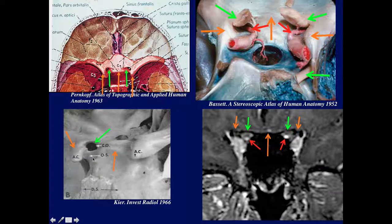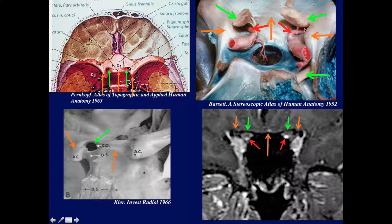Looking from behind, these are the anterior clinoids, and this is the opening for the optic canal. The anterior clinoid is always lateral to the optic canal. Here are the planum sphenoidale and tuberculum sellae. Looking from above and behind, here's the pituitary fossa with the diaphragma sellae, and these are the two optic nerves cut as they enter the optic canal. The ophthalmic artery comes off the carotid as it emerges from the cavernous sinus, with the anterior clinoids on either side.